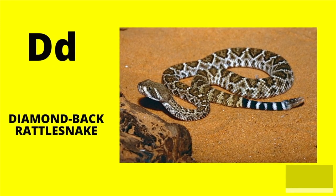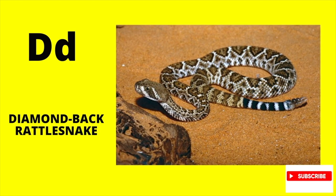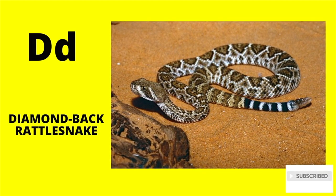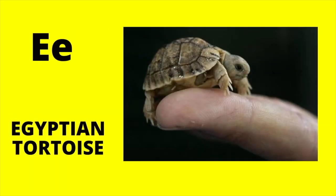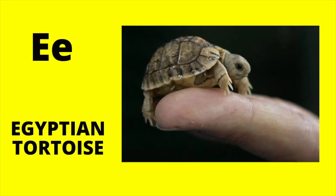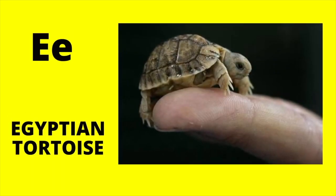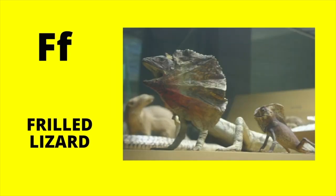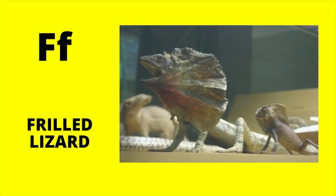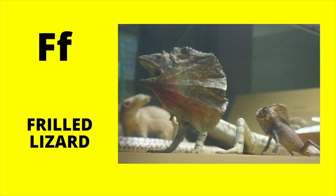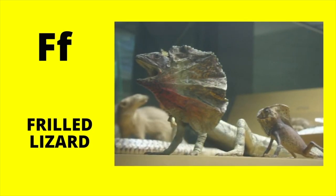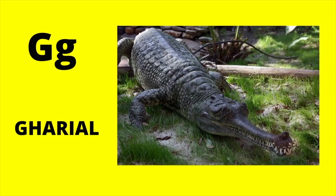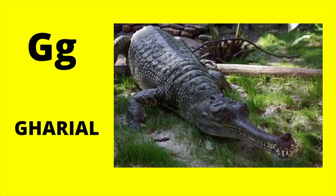D is for Diamondback Rattlesnake. D, Diamondback Rattlesnake. E is for Egyptian Tortoise. E, Egyptian Tortoise. F is for Frilled Lizard. F, Frilled Lizard. G is for Gavial. G, Gavial.